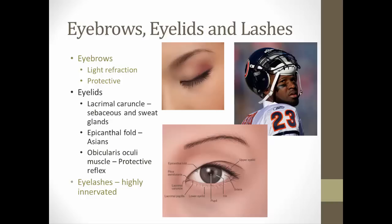The eyelids are protective in nature — they close the eye and help regulate the amount of light entering the eye. Associated structures include the lacrimal caruncle, the area on the inside of the eye consisting of sebaceous and sweat glands that produces the material we call sleep. The epicanthal fold is seen in individuals of Asian descent, and the orbicularis oculi is the muscle that controls the opening and closing of the eyelids as a protective reflex.